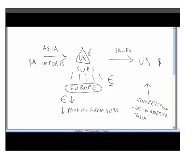Second, XPLC imports goods from Asia and pays in Asian currencies. If those currencies rise against sterling, the cost of imports increases. Because they operate in a competitive market, they may not be able to raise prices to compensate, so increased costs lead directly to reduced profits — a risk to their longer-term cash flows.